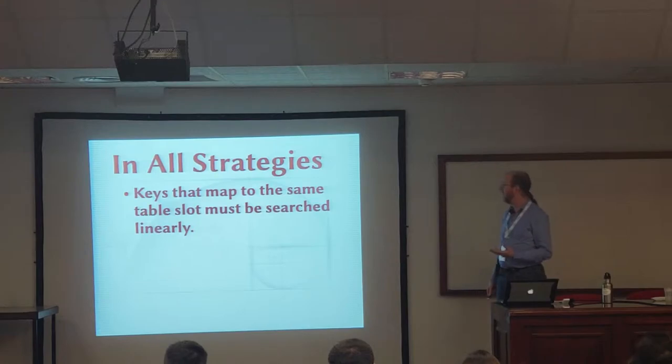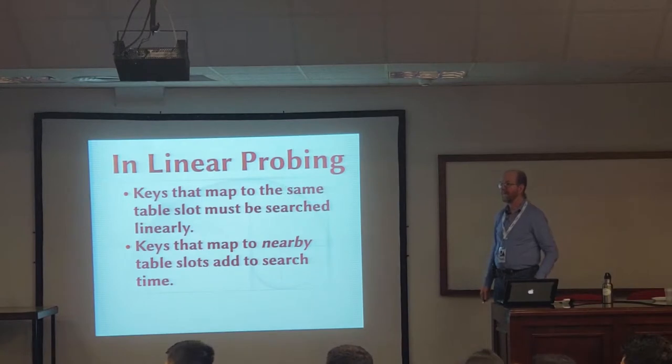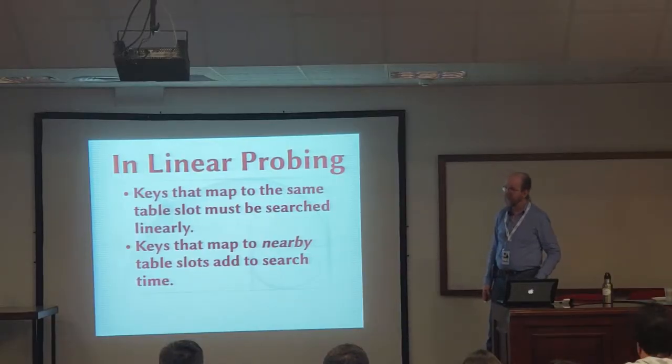Things that these strategies have in common is that things that map to the same slot have to be searched linearly. Every time you find a collision, enlarge the table? That will, enlarging the table is difficult. Enlarging the table is very expensive because you have to rehash everything in it. Rehashing everything in it will not guarantee you that you will not have collisions. You do enlarge the table when it gets too full. When it gets too close to full, then the performance will degrade. You do want to enlarge the table.